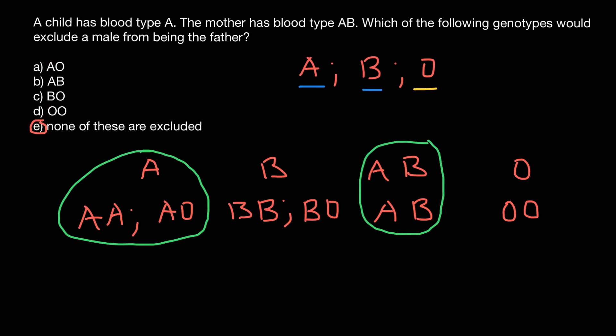The only genotype out of the six that we can exclude as a possible father is genotype BB. In this case, if the mother — blood group AB — gives allele A, the father can only give allele B, so the child cannot be blood group A. We can exclude only this one genotype; all the rest can produce a child who is blood group A.